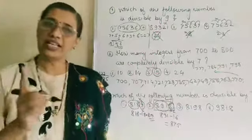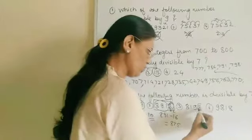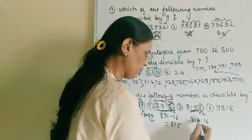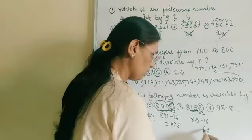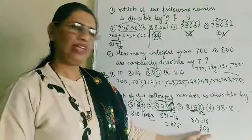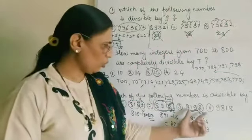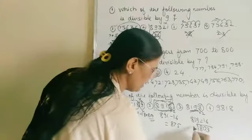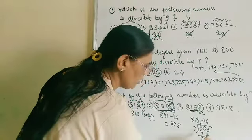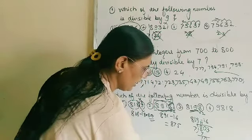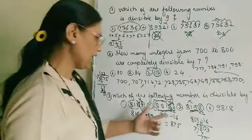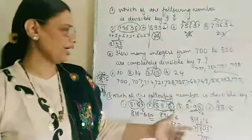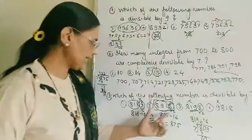To revise the divisibility test for 7: take the digit at the unit place and double it, then subtract that from the remaining number. If the result is exactly divisible by 7, then the whole number is divisible by 7. Checking the other options, the calculations yield remainders not divisible by 7, so those options are incorrect. Therefore only the second option — 8918 — is correct.